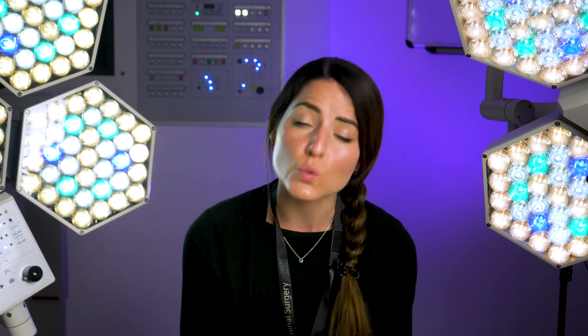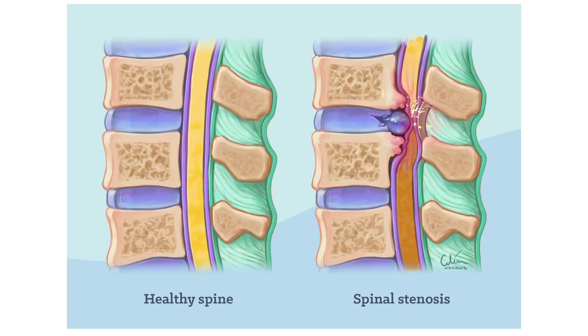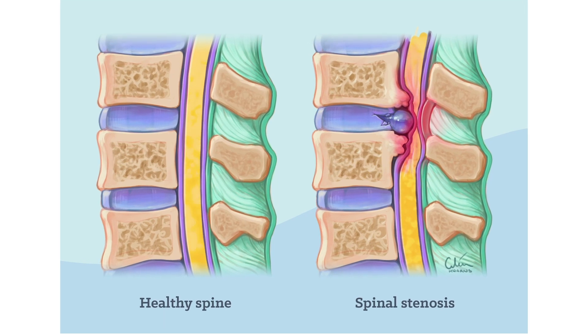Alongside age-related changes to the disc, the surrounding bony structures of the spinal column can also develop changes as you age, putting pressure on your nerves. One of the more common changes that can take place is a narrowing of the spinal canal where the spinal nerves travel through. This is known as spinal stenosis.